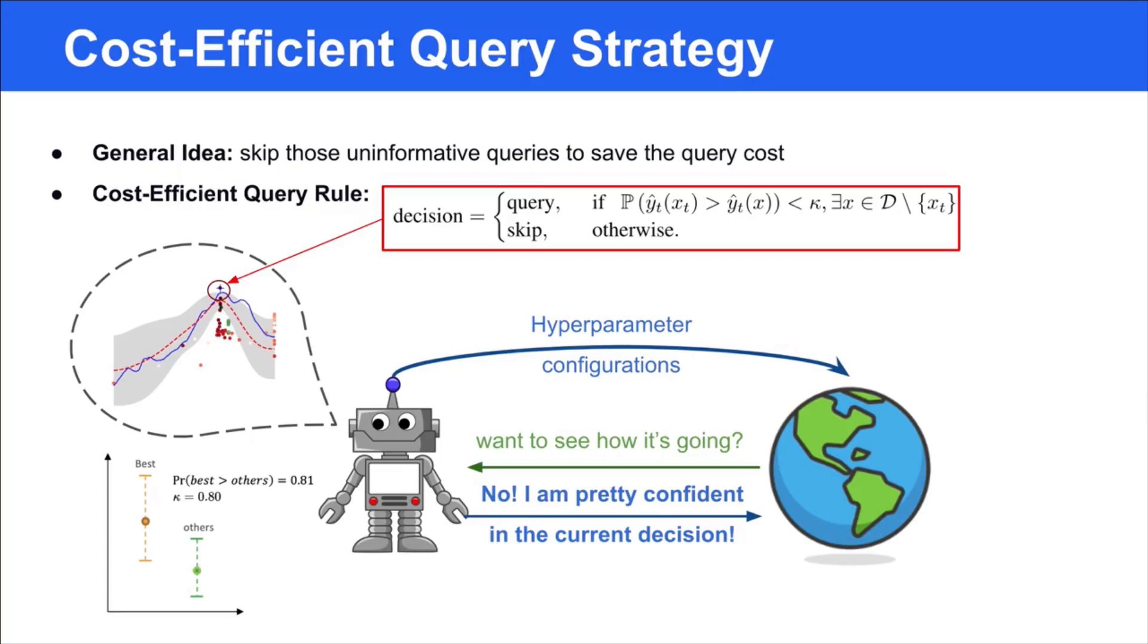More specifically, if the posterior predictive estimation of the best candidate is greater than the posterior predictive estimation of any other candidates with high probability, the agent will skip the query. In other words, if the agent is pretty confident that the current decision will lead to minor regret, it will not receive the feedback to save the query cost.